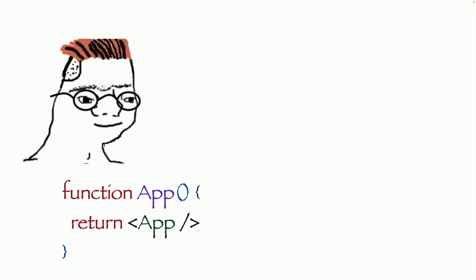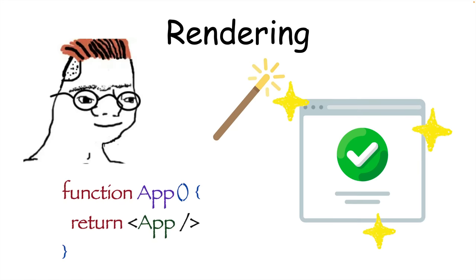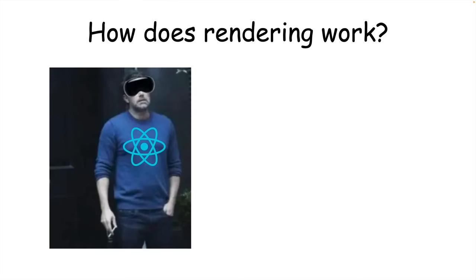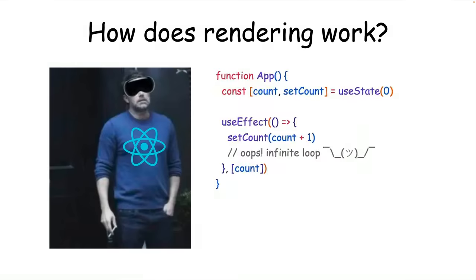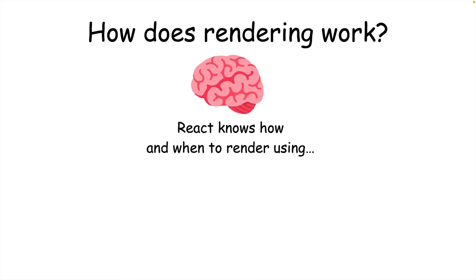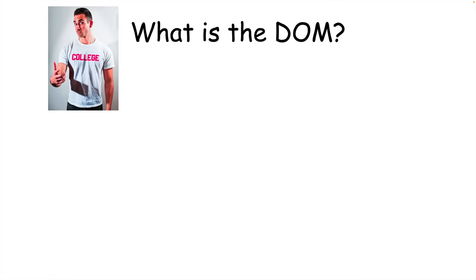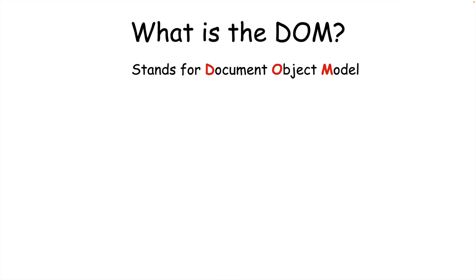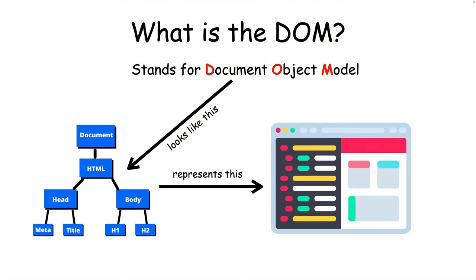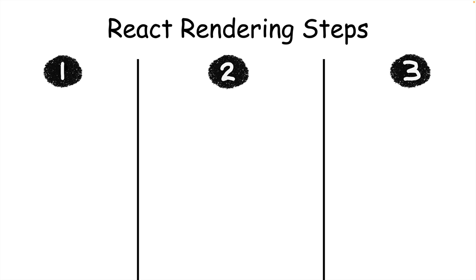But how does React take all your code and make it display something in the browser? That process is called rendering. React does this for us, but it's important to know how it works, because sometimes we can cause it to infinitely re-render, which crashes our app. The way React knows how and when to render our application is using something called the virtual DOM, also known as the VDOM. DOM stands for Document Object Model, which is what every browser uses to model all the HTML elements on a webpage, and when you draw it out, it kind of looks like a tree.